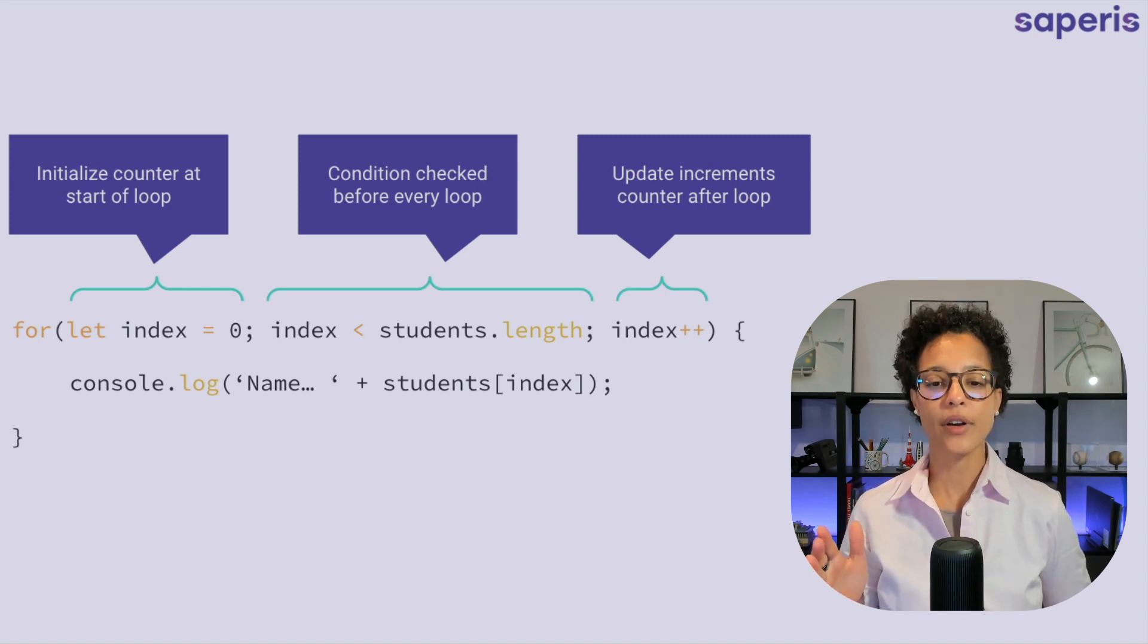And the last element is the incrementing of our counter. So that means after the loop has run, we want to add one to our counter. And within the curly brackets, well that's what runs whenever the loop is going on or is running.